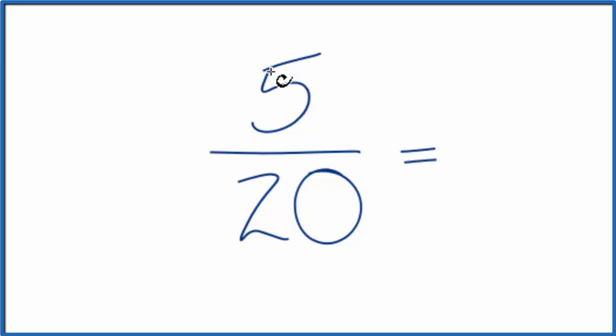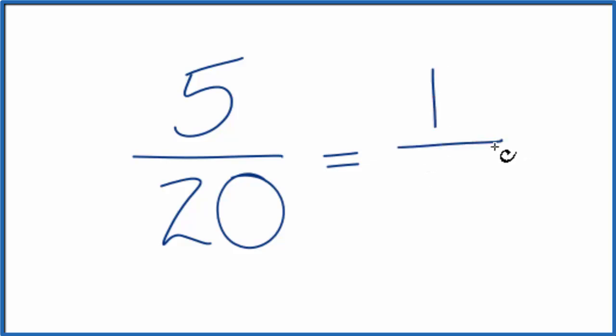So if we divide 5 by 5, the numerator there, we get 1. If we divide 20 by 5, we get 4, because 4 times 5, that's 20. And we've simplified the fraction 5 20ths down to 1 4th.